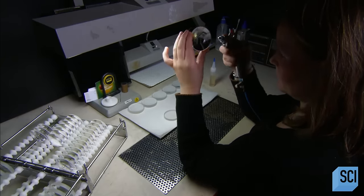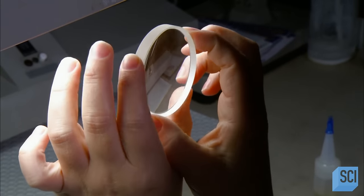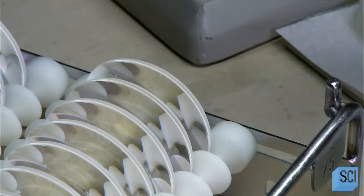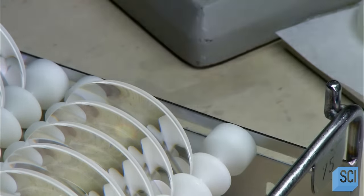After inspecting the lenses, a technician glues two together. A double lens limits a type of distortion that causes fringes of color to appear around the image.